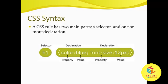A CSS rule has two main parts: a selector and one or more declarations. The figure shows the syntax of CSS and how to define CSS for a particular element. Here the selector is nothing but an HTML element or HTML tag. Every CSS style for a particular element is surrounded by curly braces. So this is how we can define CSS.